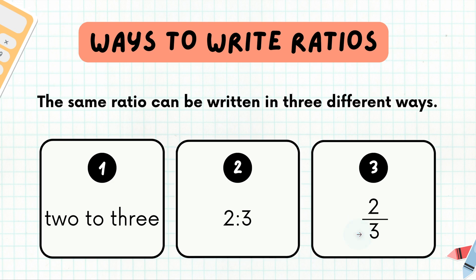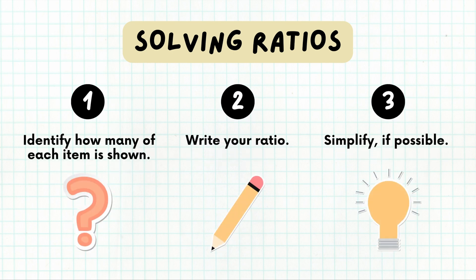And last but not least, you can write it like a fraction. This means two to three. When solving ratios, there are three simple steps. Number one, you need to identify how many of each item is shown, and we did that on the first slide. We identified that there were three yellow calculators and two red.